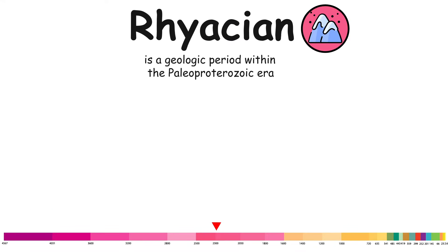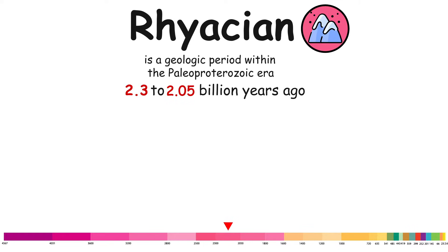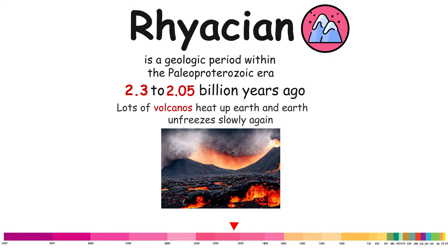Rhyacian. The Rhyacian is a geologic period within the Paleoproterozoic era, spanning approximately from 2.3 to 2.05 billion years ago. During this period, lots of volcanoes heated up Earth, and Earth unfroze slowly again.